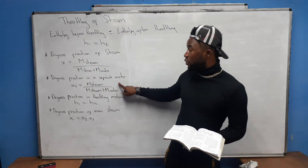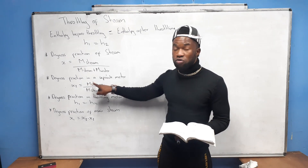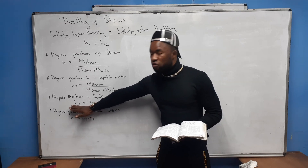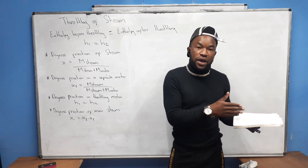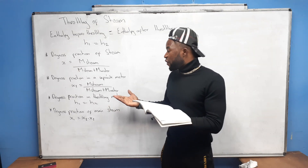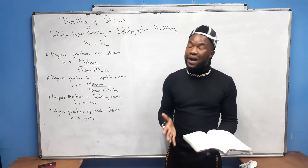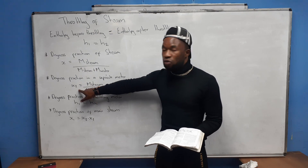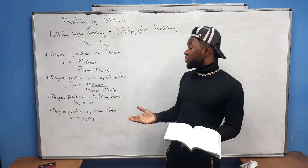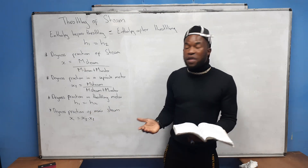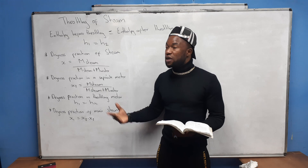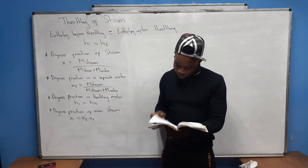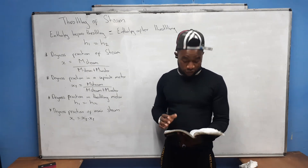To get x2, the dryness fraction in the separating meter, it's mass of steam divided by mass of steam plus mass of water. To get x3 you use the initial and final enthalpy. Then the dryness fraction of the main steam is x1 equals x2 multiplied by x3. Without wasting more time, let's do an example from the textbook.